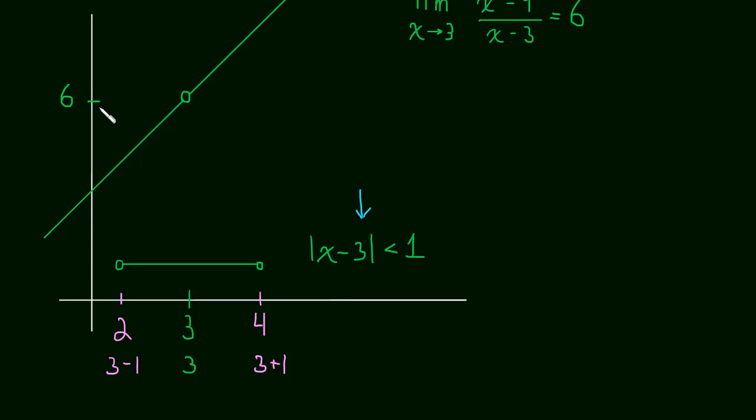We could do the same thing for f of x. If we wanted, let's say this was 7 and this was 5. Well, then if we wanted to force f of x to be in that interval, then we can write the absolute value of f of x minus 6 is less than 1. So this says f of x is within 1 unit of 6.